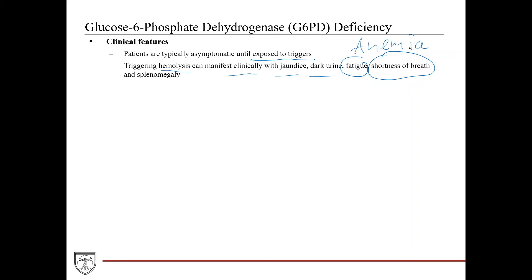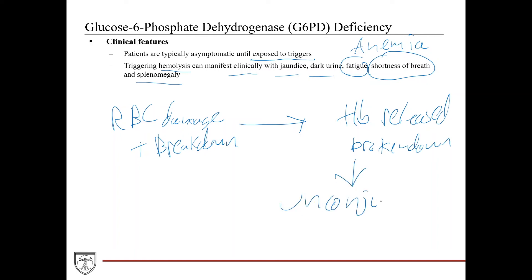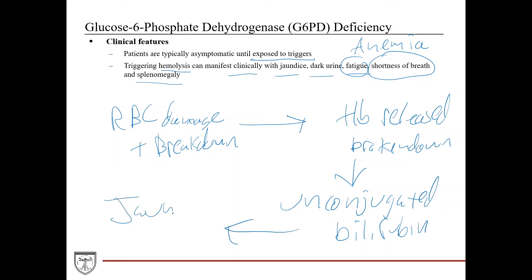Patients have decreased levels of red blood cells and splenomegaly, as the spleen clears damaged red blood cells. Jaundice and dark urine occur because red blood cell damage leads to breakdown and release of hemoglobin. Hemoglobin is broken down into unconjugated bilirubin, which causes yellowing of the skin and eyes — jaundice — and can also cause dark urine.